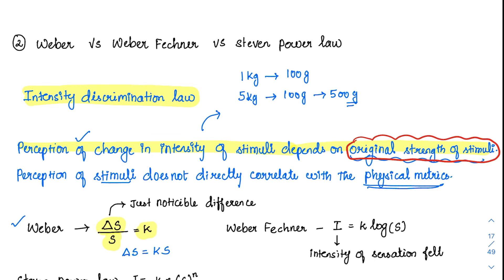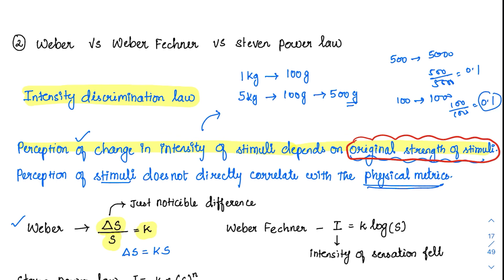Applying our example: the just noticeable difference was 500 grams when the original stimulus was 5 kg, that is 5000 grams. So 500 divided by 5000 equals 0.1, which is a constant. For the other example, 100 grams was the just noticeable difference for 1 kg, which is 1000 grams. So 100 divided by 1000 is again 0.1 — it is constant.